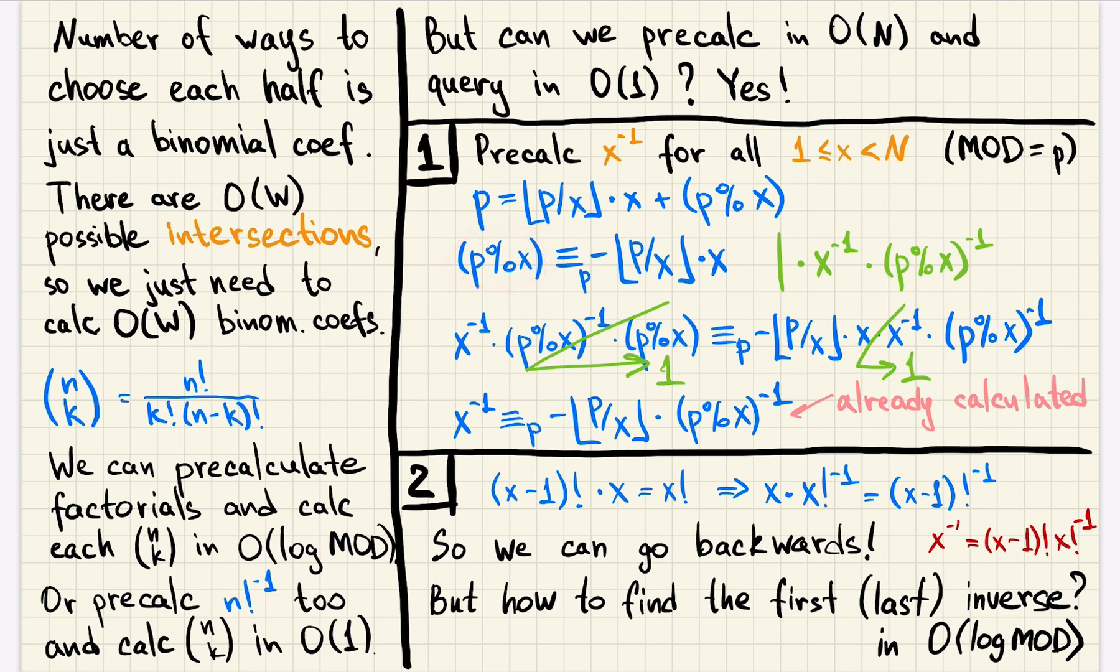Let's take our equation and multiply it by inverse of x and inverse of p modulo x. On the left, p modulo x and inverse of p modulo x will kill each other. We will get one here, so only inverse of x will be left on the left side. On the right side, x and inverse of x will kill each other and give one in the product. So on the right side, we will just get minus p divided by x multiplied by inverse of p modulo x. So to calculate the inverse of x, we want to calculate the inverse of p modulo x. Sounds like that was pointless, but actually that's not true because p modulo x is strictly less than x. So for it, the inverse is already calculated. So we do this kind of dynamic programming. Getting inverses for all the numbers from 1 to n in order using previously calculated values. That works in linear time in n.